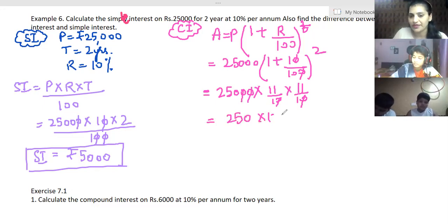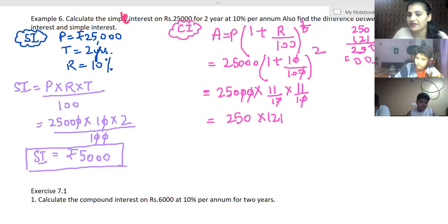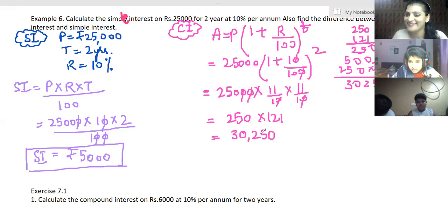Let me quickly multiply this here. I know you kids are very fast in the calculations, right? But let's do it quickly. So it is - yes, I am going to get - I have got 30,250. Yes, 250, 250. Yes.